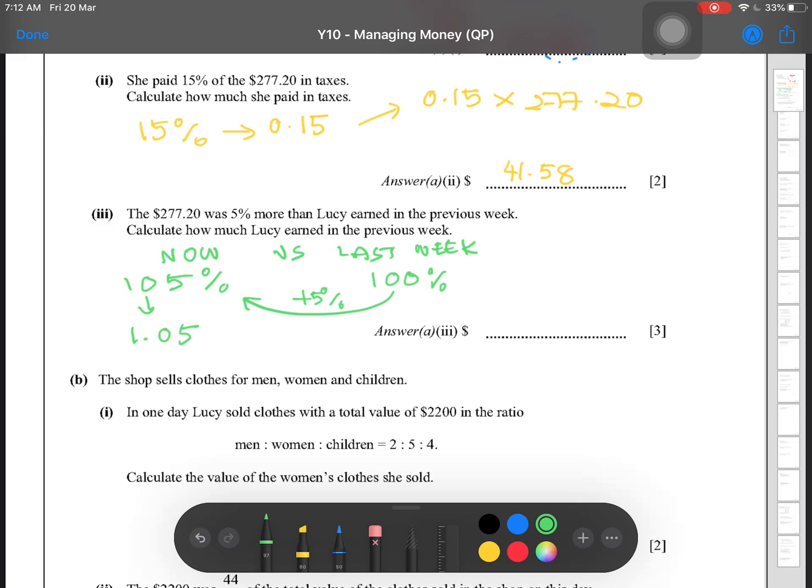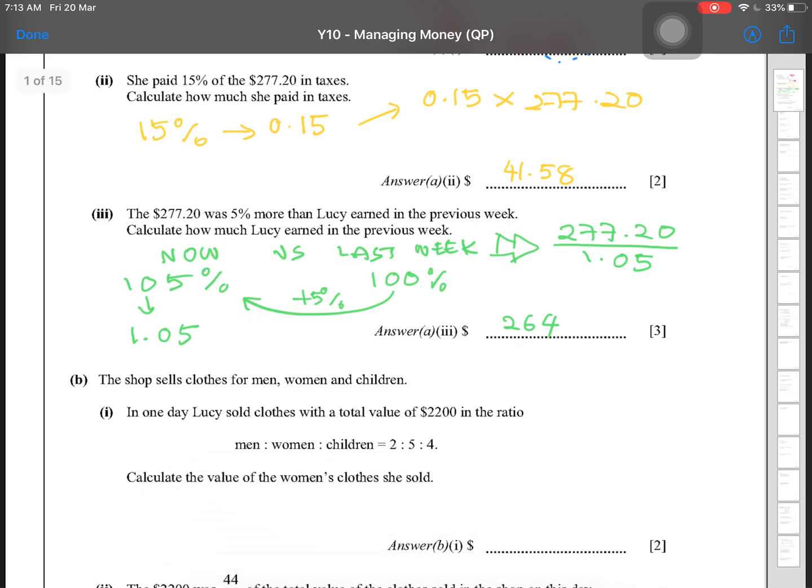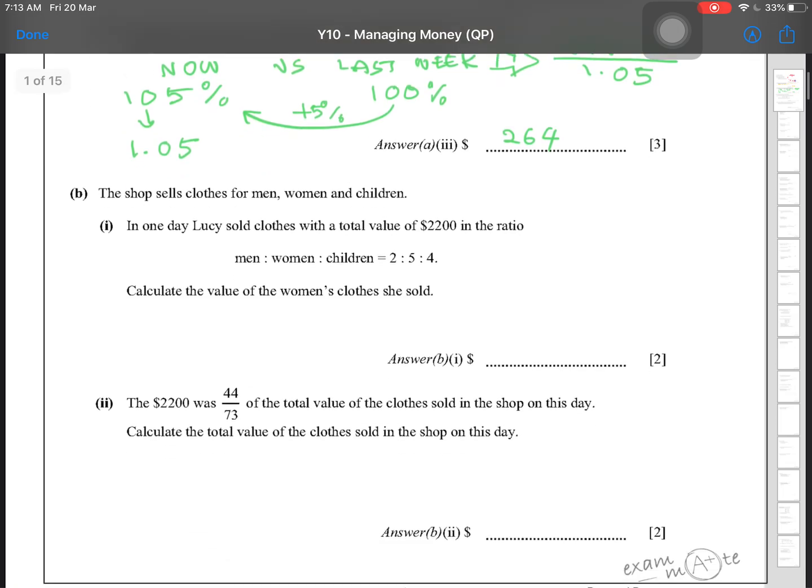So the multiplier for this is 1.05. And then, once we know this, the shortcut method for this is 277.20 divided straight away by the multiplier. And this will give you 264. Done.